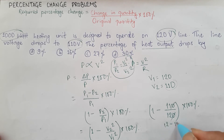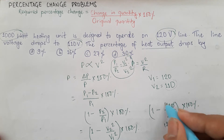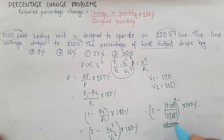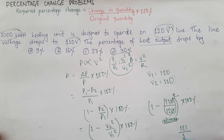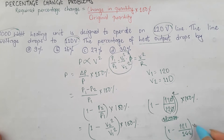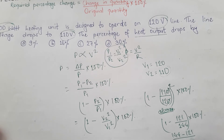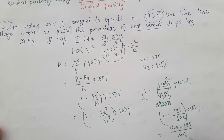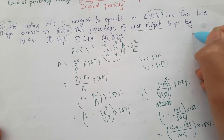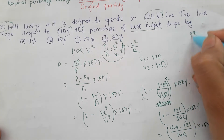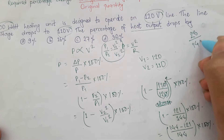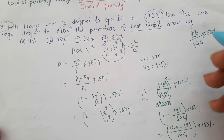Squaring the fractions: 110/120 becomes 11/12 squared. So the expression is 1 minus (11/12)², into 100%, which gives (144 minus 121) divided by 144, into 100%. That is 23/144 into 100%.